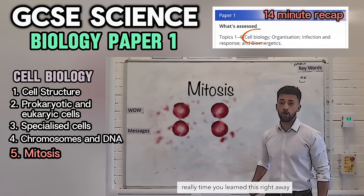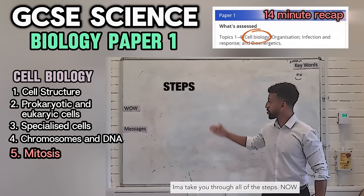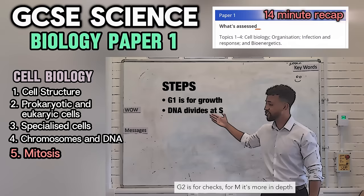I'm teaching you this process, all you need to do is stay. I'll take you through all of the steps — all you gotta do is do your best. G1 is for growth, DNA replication at S. G2 is for checks, but M phase is more in depth.